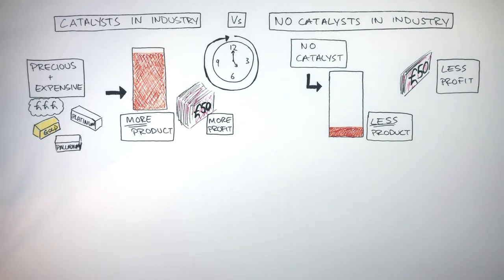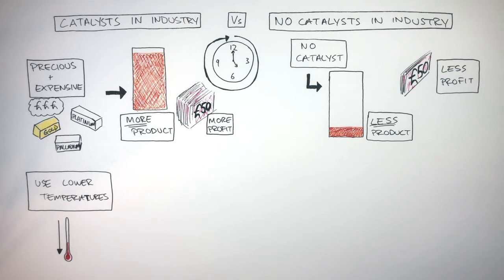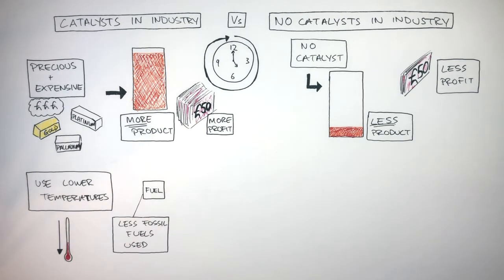Another advantage of catalysts is they allow companies to use lower temperatures, due to catalysts lowering the activation energy of the chemical reaction. Using lower temperatures saves the company money and helps the environment. This is because high temperatures are normally needed for the chemical reaction, which comes from burning fossil fuels. This small container of fuel represents there being less fossil fuels used by the company as they require lower temperatures due to the catalyst.